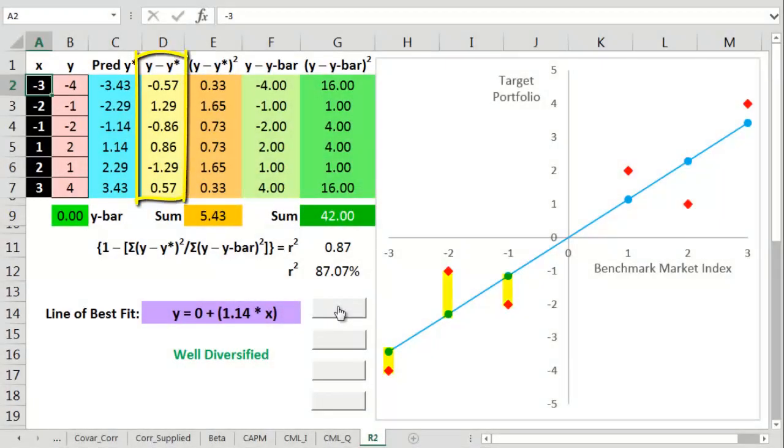we figure out what the standard error is between each actual y value and each predicted y value. Then we square these values. Then we add them all up into a big fat sum.